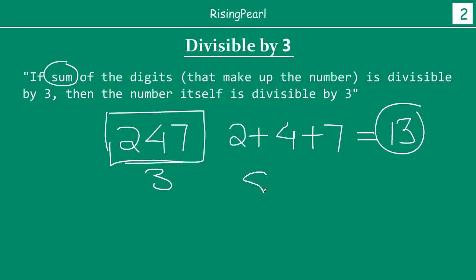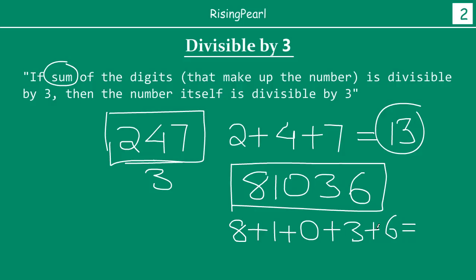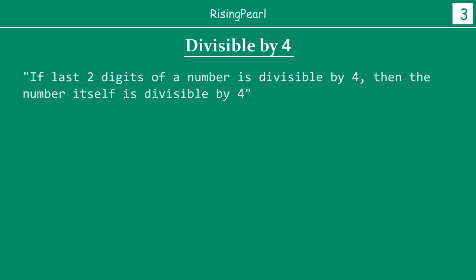On the other hand, if I have a number 81036 — is this divisible by 3? I'll add the digits: 8 plus 1 plus 0 plus 3 plus 6. So 8 plus 1 is 9, plus 0 is 9, plus 3 is 12, plus 6 is 18. And 18 is indeed divisible by 3 because 3 times 6 is 18. So yes, this number is divisible by 3. See how amazing it is — just by looking at a number, we can say if it is or not divisible by any given number.